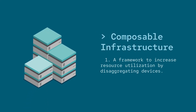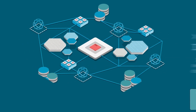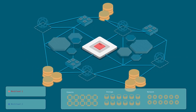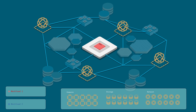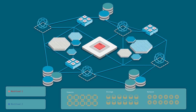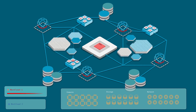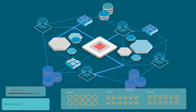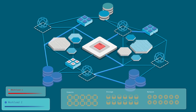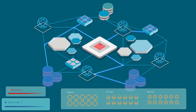Composable infrastructure is a framework to increase resource utilization by disaggregating devices. Compute, storage, and networking resources are abstracted and provisioned — or composed — as needed by software. This provides better resource utilization, faster deployments, and more flexibility.